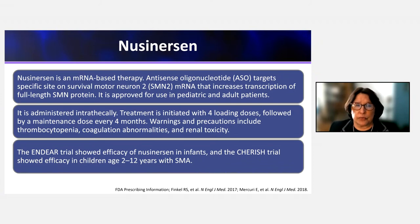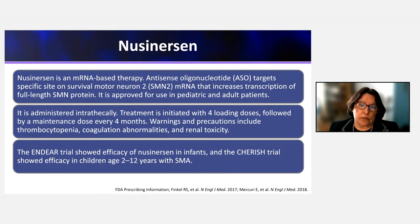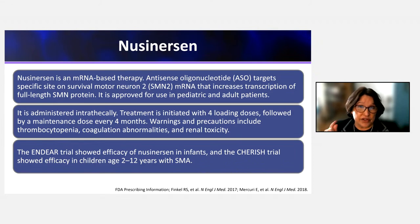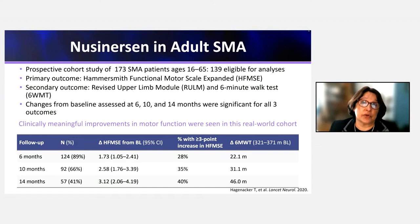The ENDEAR study showed efficacy of nusinersen in infants. The other pivotal trial — CHERISH — showed efficacy in late-onset SMA, primarily type 2, in children aged approximately 2 to 12 years, though the youngest enrolled child was age 9, and the trial excluded patients with notable scoliosis greater than 30 degrees. There are studies of nusinersen in adults, but they are observational — not placebo-controlled trials.